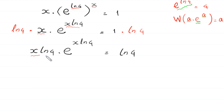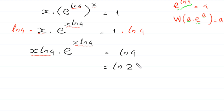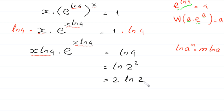Now we have the same expression x times ln of 4 on the left side and the same power of e, x times ln of 4, so the Lambert W function can be applied. We work on the right side: ln of 4 can be written as ln of 2 squared, and by the natural log property ln of a to the power m equals m times ln of a, this becomes 2 times ln of 2. To use the Lambert W function here, we must have e in this expression.